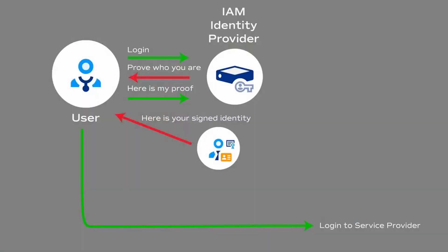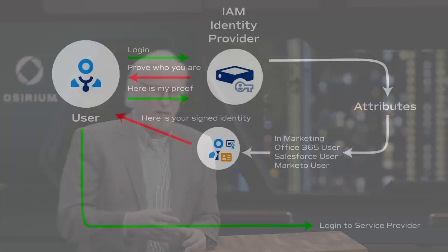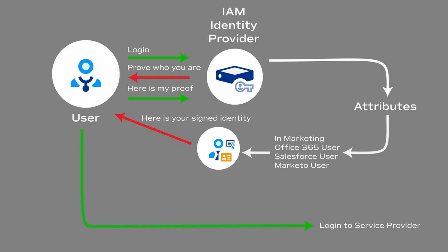Let's take IAM for example. IAM is mostly concerned with the identity of the user, and it can prove the identity of the user by using multi-factor authentication, biometrics, and other things. The user within the system often has attributes associated with it, and those attributes are used when that system does the single sign-on to an application — normally using SAML.